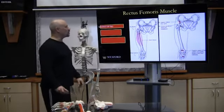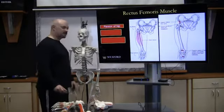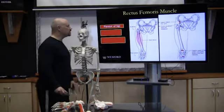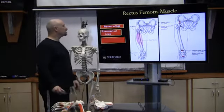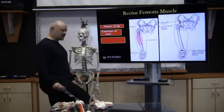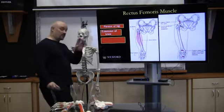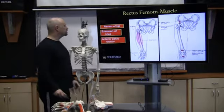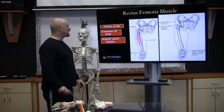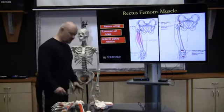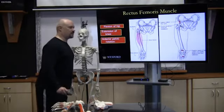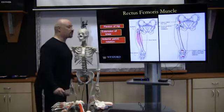The rectus femoris does flexion of the hip and extension of the knee, because it crosses two joints. It also does anterior pelvic rotation — when the feet are fixed and it contracts, it will help tilt the pelvis forward.